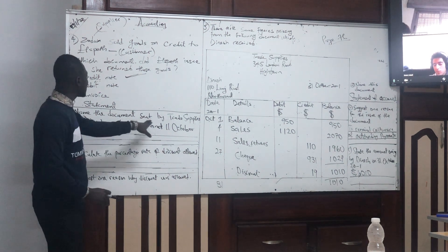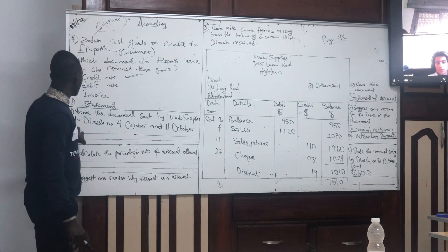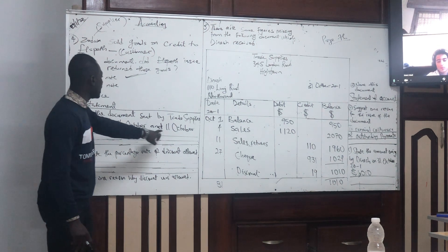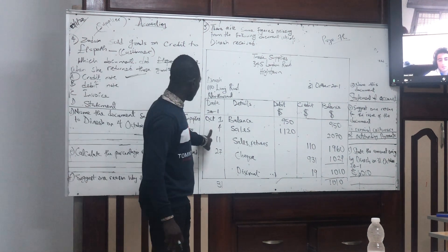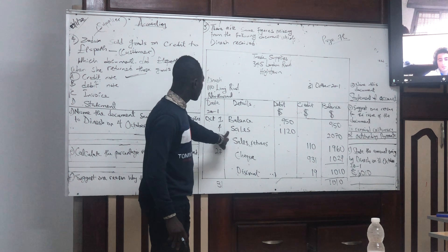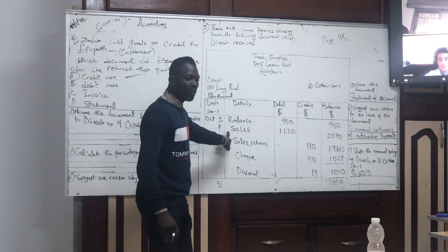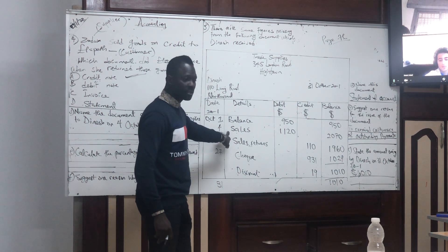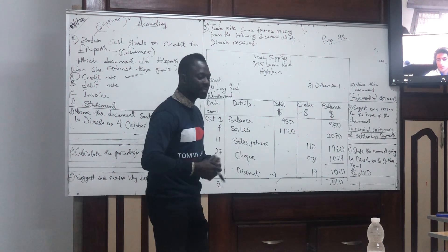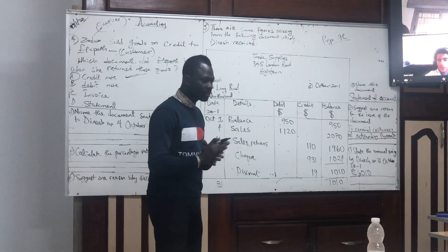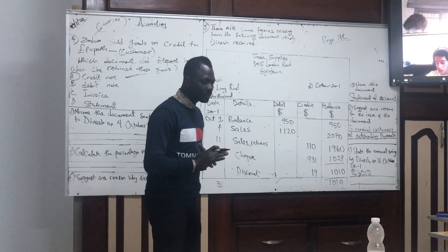Name the document sent by Trade Supplies to Diners on 4th October and 11th October. On 4th of October, for sales — what document will you send for sales?